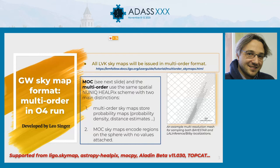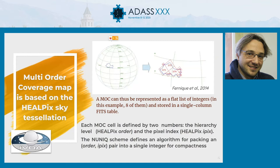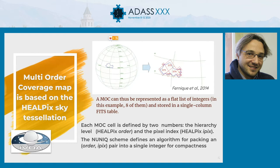MOC and multi-order are closely related. Multi-order encodes probability maps — meaning probability density and distance estimations — while MOC maps regions with no value attached. More specifically, MOC is an official method to encode complex regions over the sky using predefined cells. Each MOC cell is defined by two numbers: the HEALPix order and the HEALPix ipix. MOC is based on a HEALPix tessellation of the sky; the unique scheme defines an algorithm for packing order and ipix into a single integer usually stored in a single-column system. The MOC algorithm was developed by a Fermilab collaborator in 2014 and is today supported by the International Virtual Observatory Alliance.